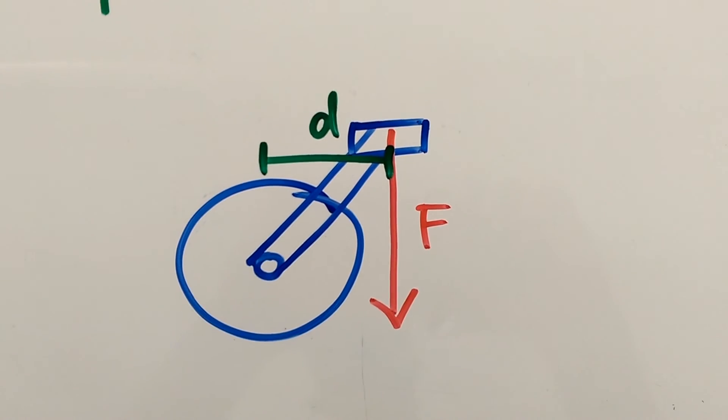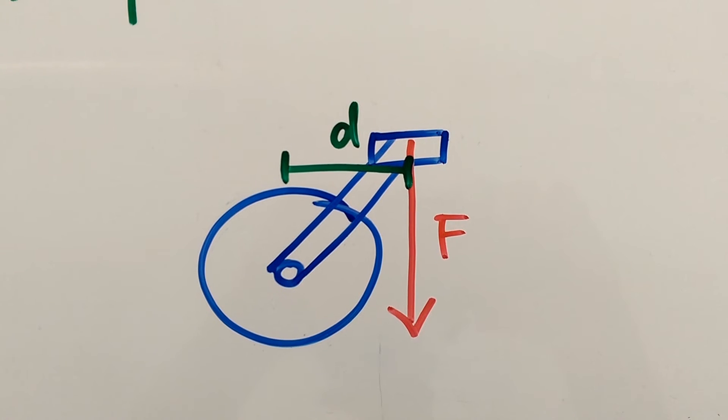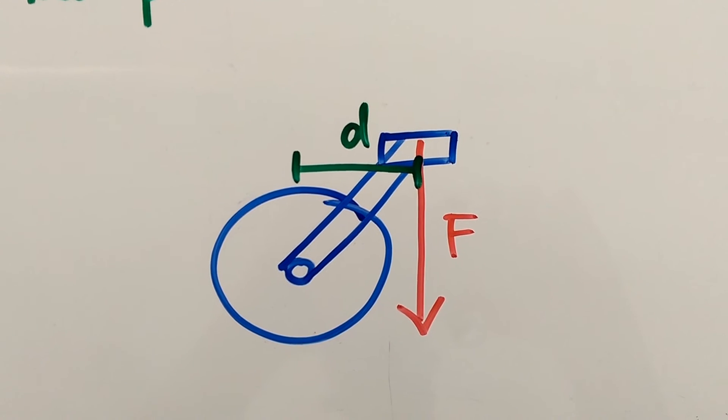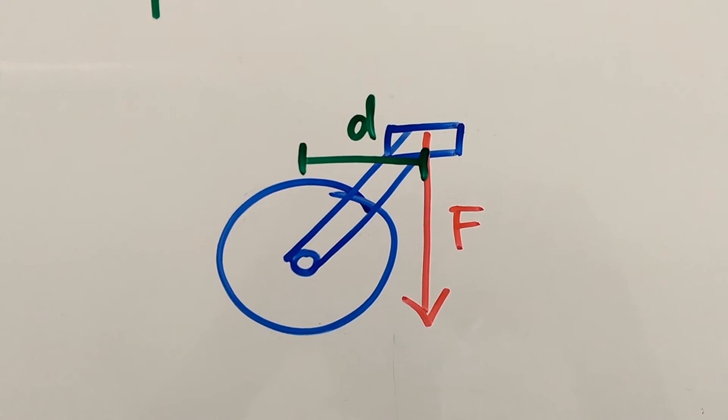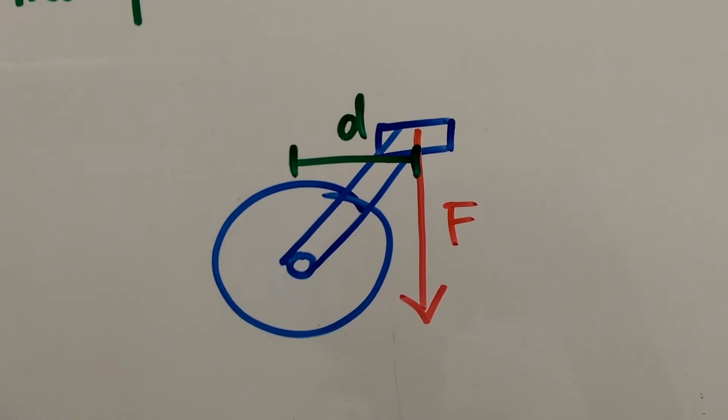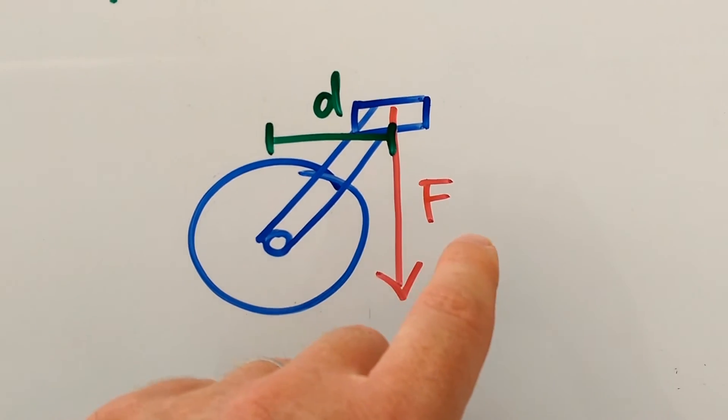So if we look at this situation here, you can see actually the moment is going to be slightly less, even though the force is the same, because the perpendicular distance from that line of that force to the pivot is less than in the previous case, where the crank was horizontal.